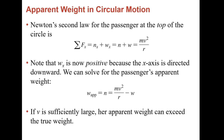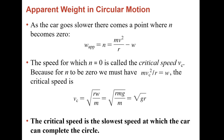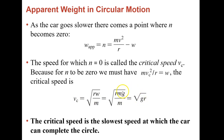You need to be able to derive these equations, look at what's going on, and be able to put two equations together to answer a question. As the car goes slower, there comes a point where the normal force is zero. We can figure out the speed at which your apparent force is zero — that's called your critical speed. The critical speed is the slowest speed at which a car can complete a circle. At that point, the normal force is zero, so the centripetal force equals the weight of the object.